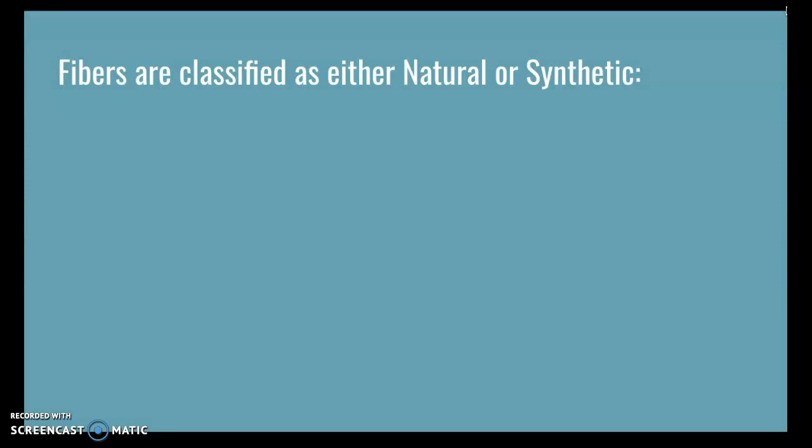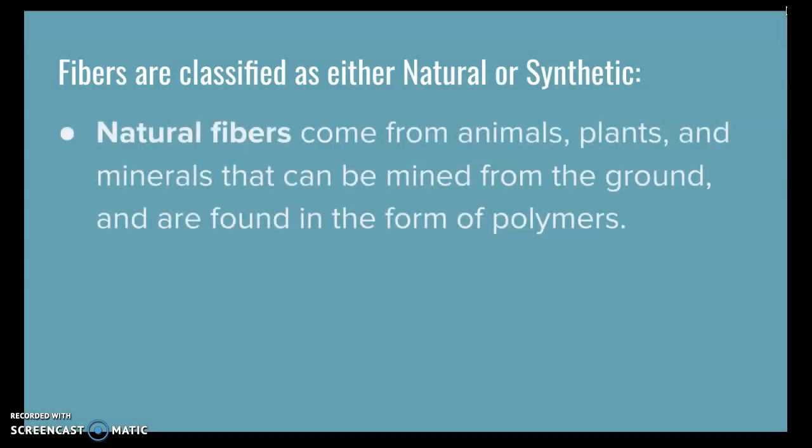Fibers are classified as either natural or synthetic. Natural fibers come from animals, plants, and minerals that can be mined from the ground and are found in the form of polymers. For animals and plants, these polymers are usually proteins, and the proteins are made up of monomers called amino acids.